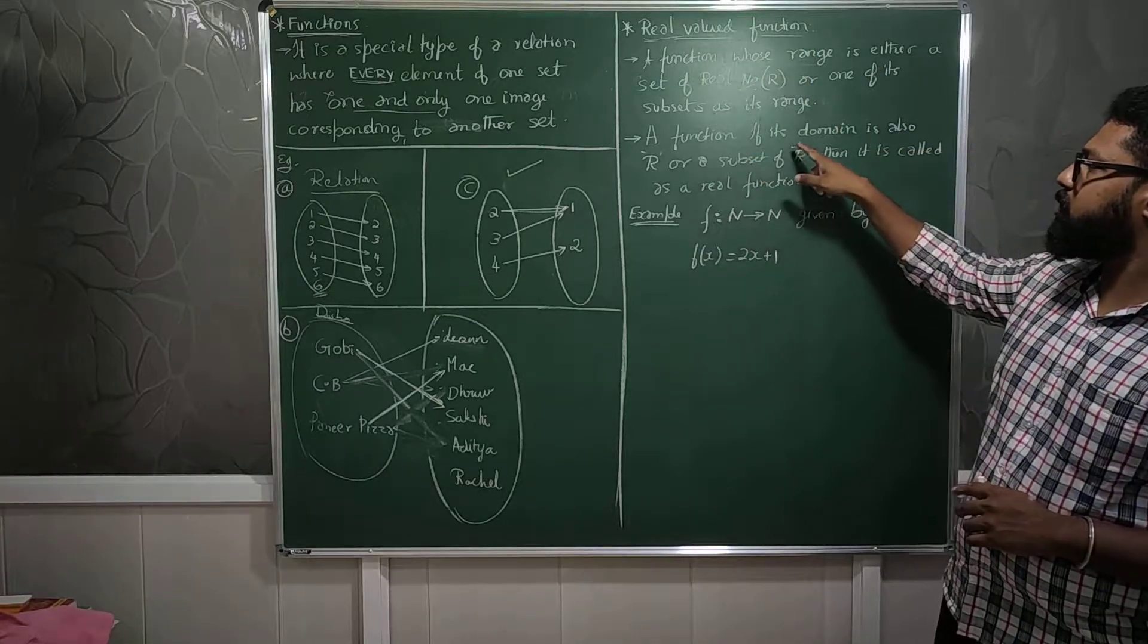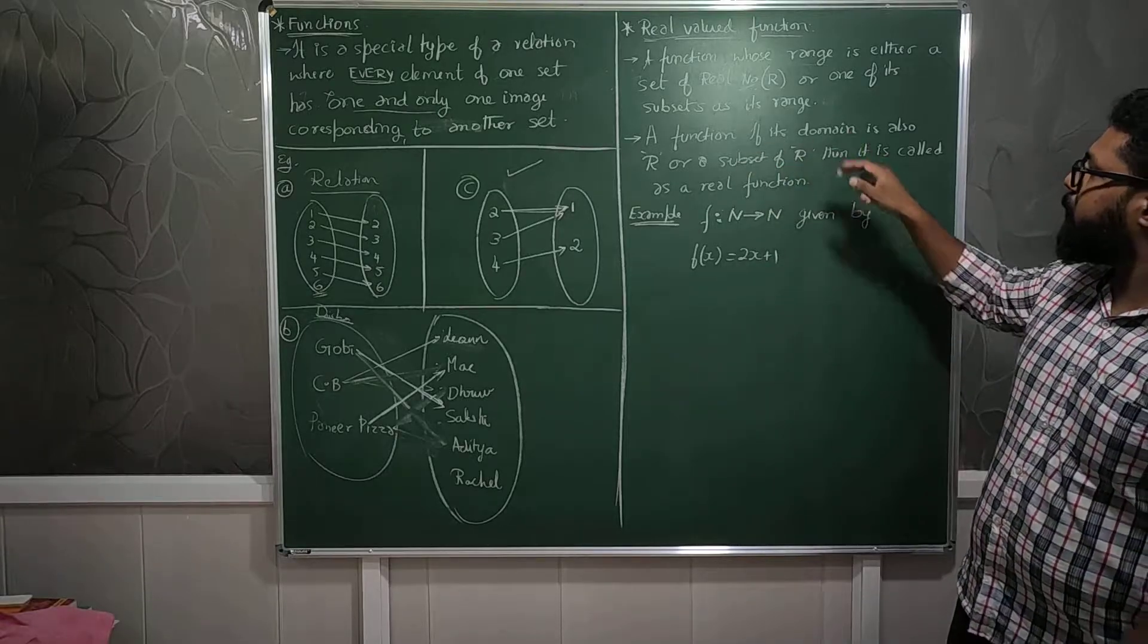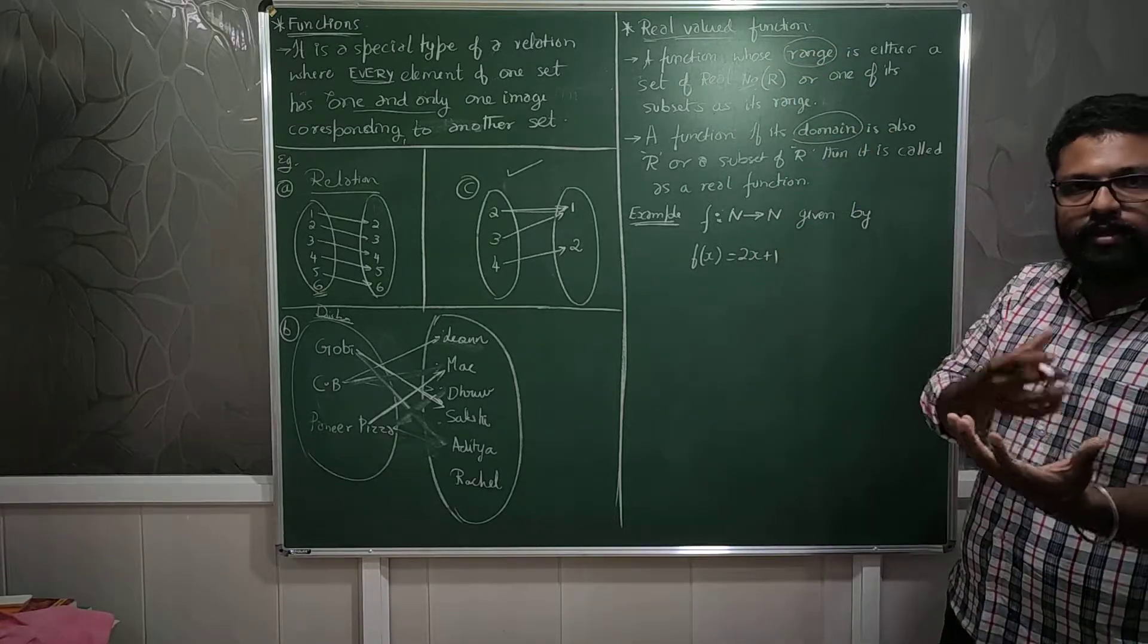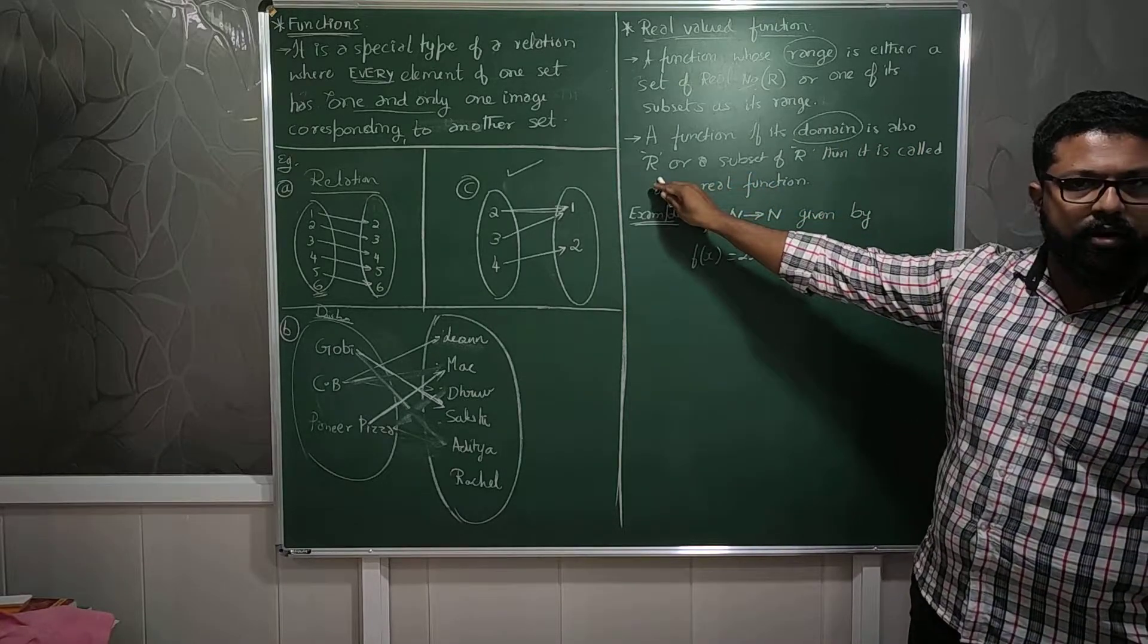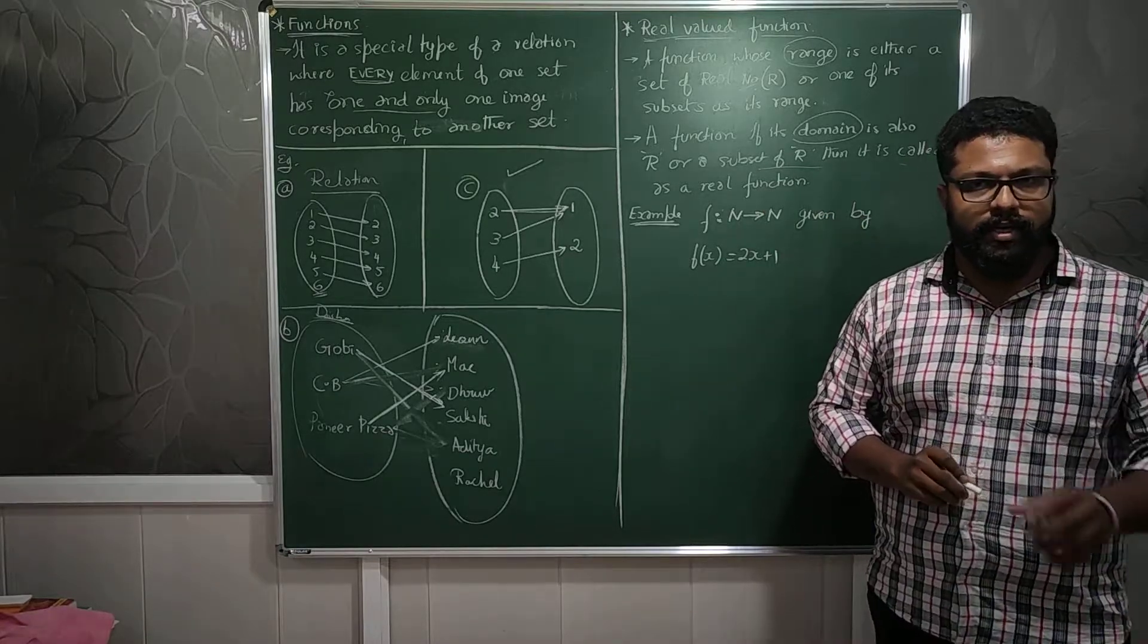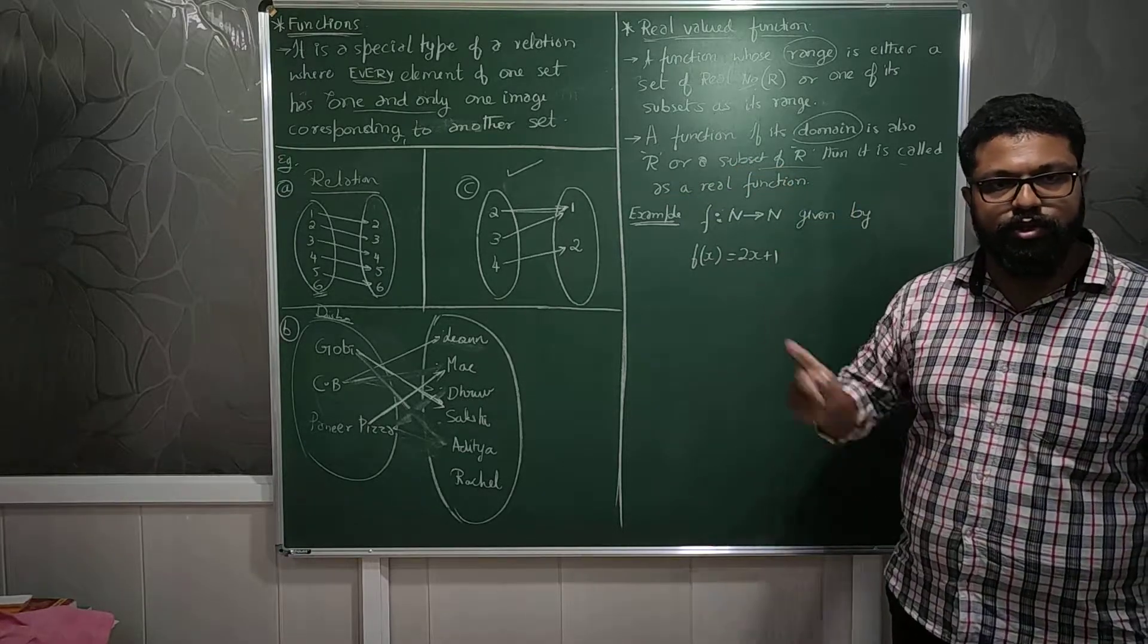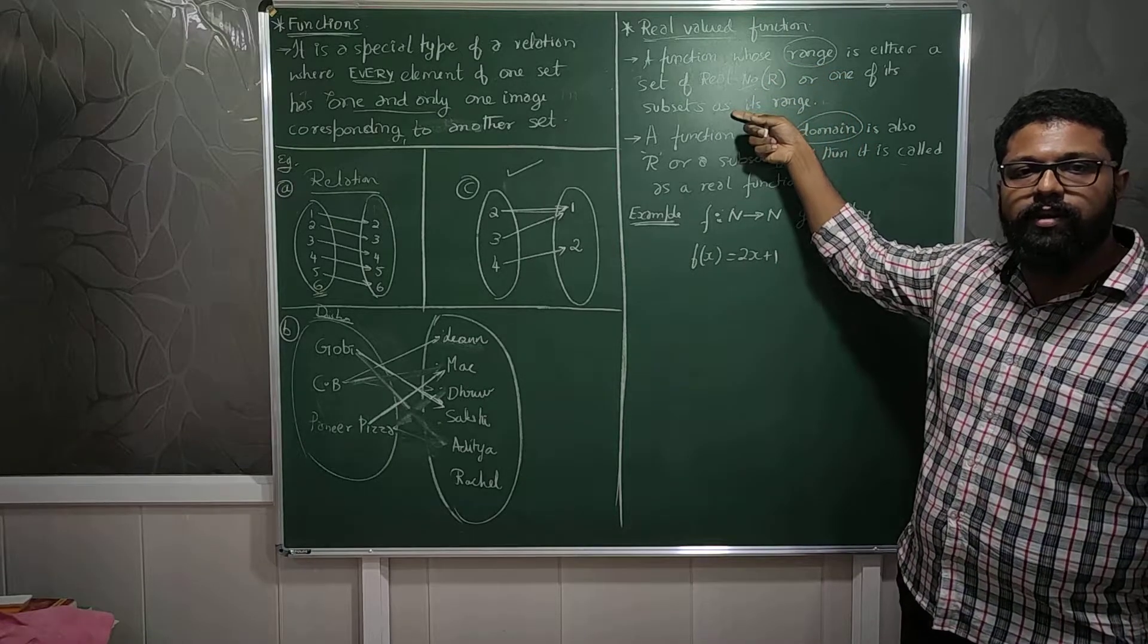Next comes a function that is about just a real function, not a real-valued. A function whose domain, here it was range, here it is domain. Range is where we are going, domain is from where we are picking. A function whose domain is also a real number or the subset of R, it is called as a real function. Whether it is a real number or a subset of real numbers, then it is called a real function. If the range is also that, then it is going to be a real-valued function.